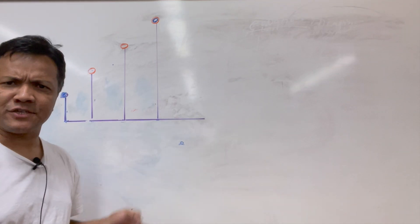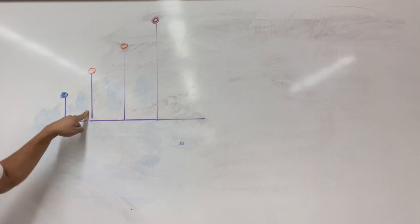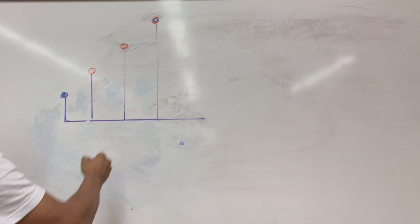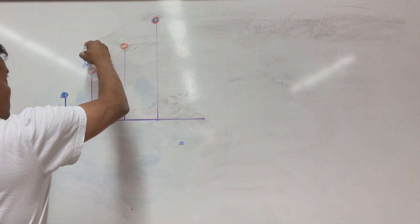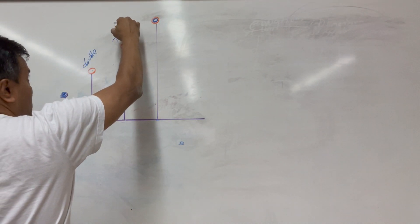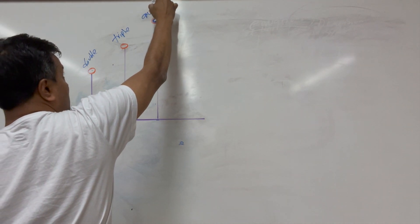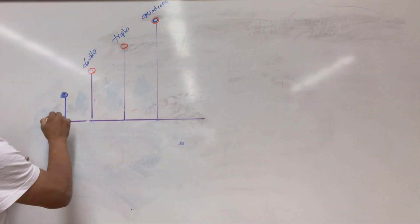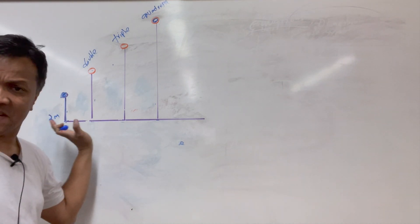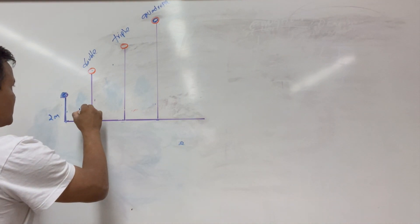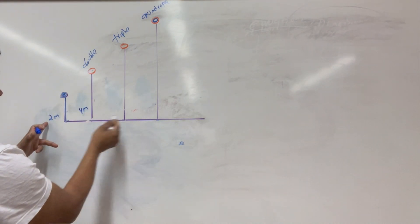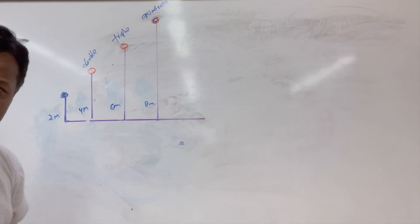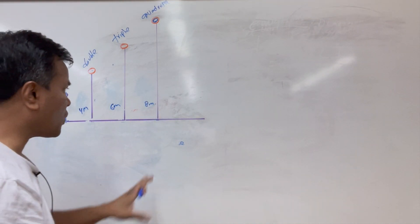I have some heights here — this is double this, this is triple, and this is quadruple. You can call it anything. You can call it 2 meters, then this has to be 4 meters, this has to be 6 meters because it's triple, and this has to be 8 meters because it's quadruple.